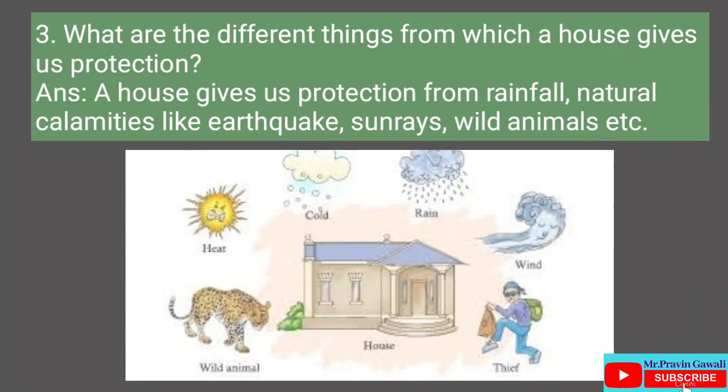Question number three: What are the different things from which a house gives us protection? The answer is: a house gives us protection from rainfall, natural calamities like earthquakes, sunrise or heat, and wild animals.